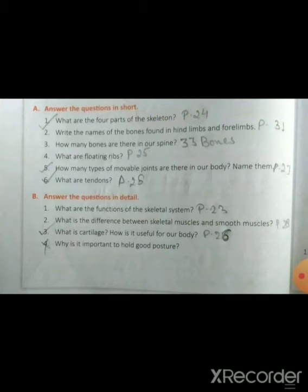Next is chapter 2, Revision 6. What are the four types of the skeleton? Second question: How many types of movable joints are there in our body? Name them. Question number 3: What are tendons?